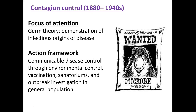The next era in public health is called the Contagion Control Era, spanning approximately 1880 through the 1940s. The focus of this era is on germ theory. At this point we have microscopes, and scientists were able to see germs and demonstrate that they were the origin of infectious disease. The action framework was to control infectious disease through environmental control, vaccinations, sanatoriums — facilities where individuals with tuberculosis were taken for fresh air — and outbreak investigation in the general population.